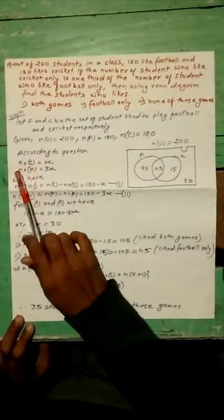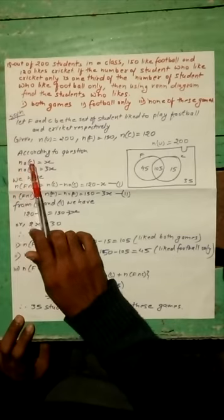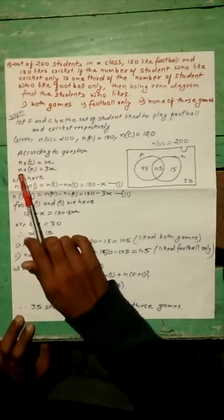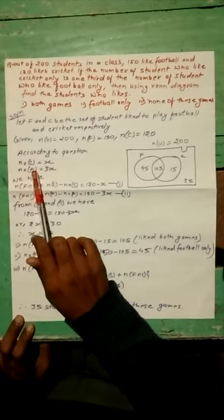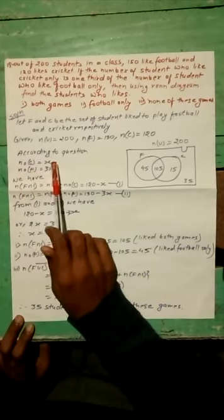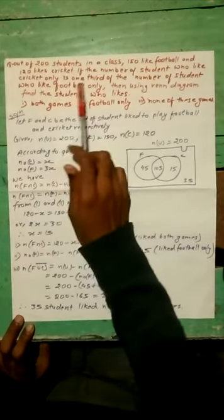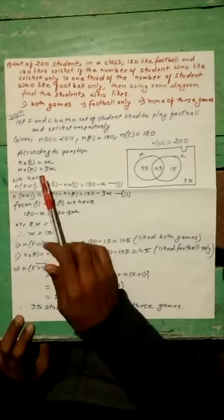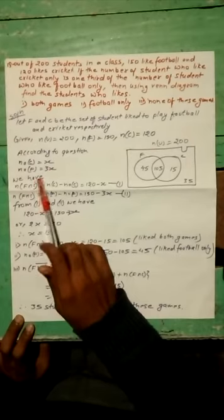n(C ∩ F') is for cricket only and n(F ∩ C') is for football only. The question is that if cricket only is X, then the football only is thrice, which is 3X. We have formula,